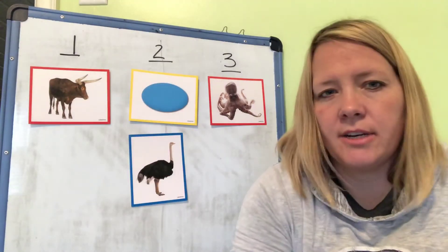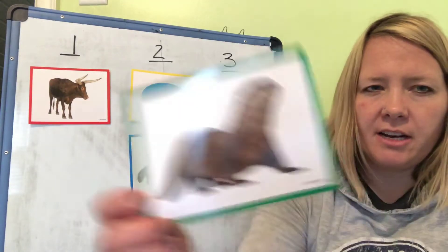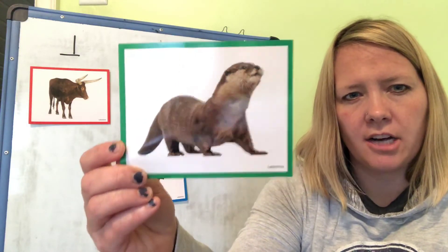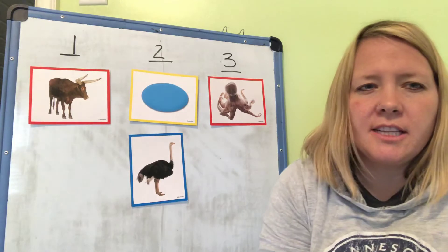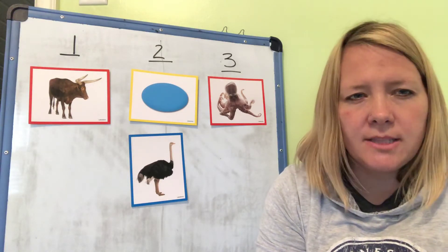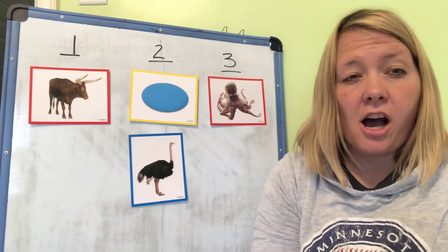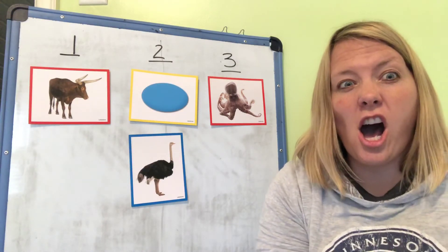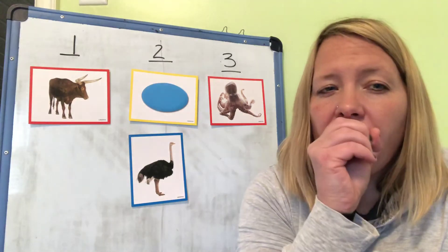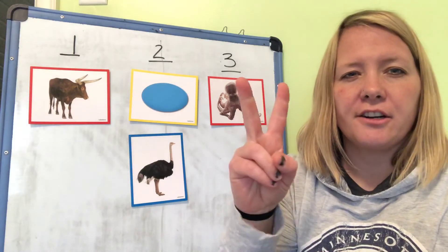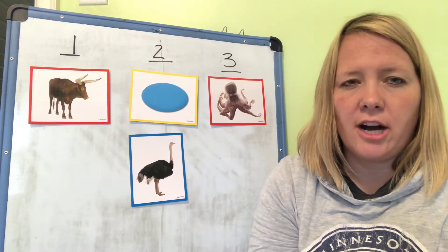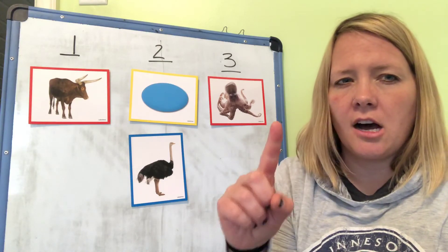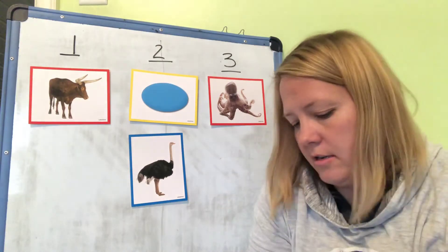Alright, last one. Does anybody know what type of animal this is? It's called an otter. Can you say otter? Otter. Here we go. Syllables, syllables, one, two, three. Break words into parts with me. Say it with me — otter. Clap it with me — otter. Stomp it with me — otter. Whisper it with me — otter. Count it with me — otter. How many syllables are in the word otter? Two. What is the first part of the word otter? Ah. I'll hang it right here.